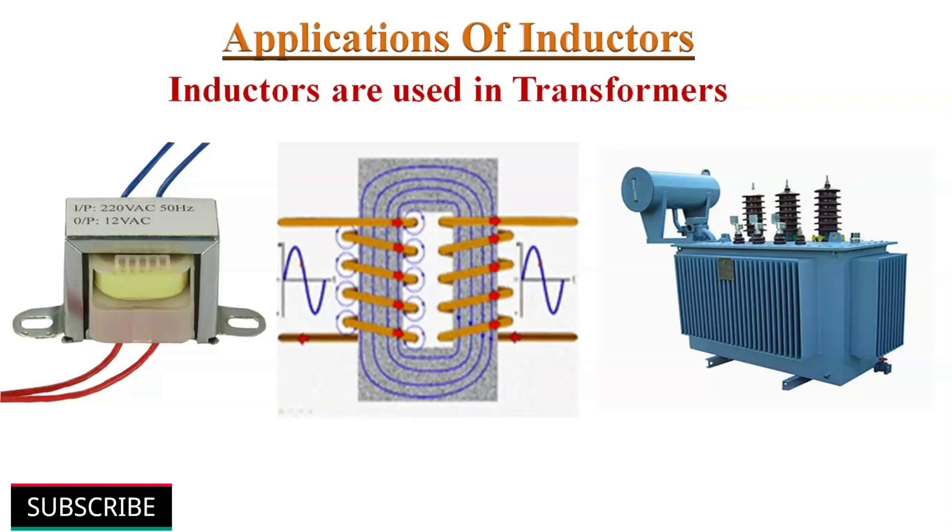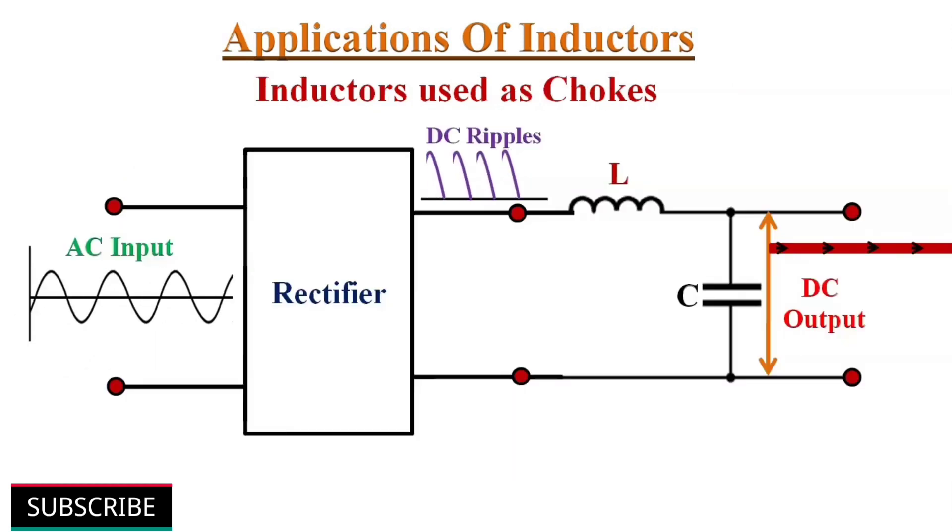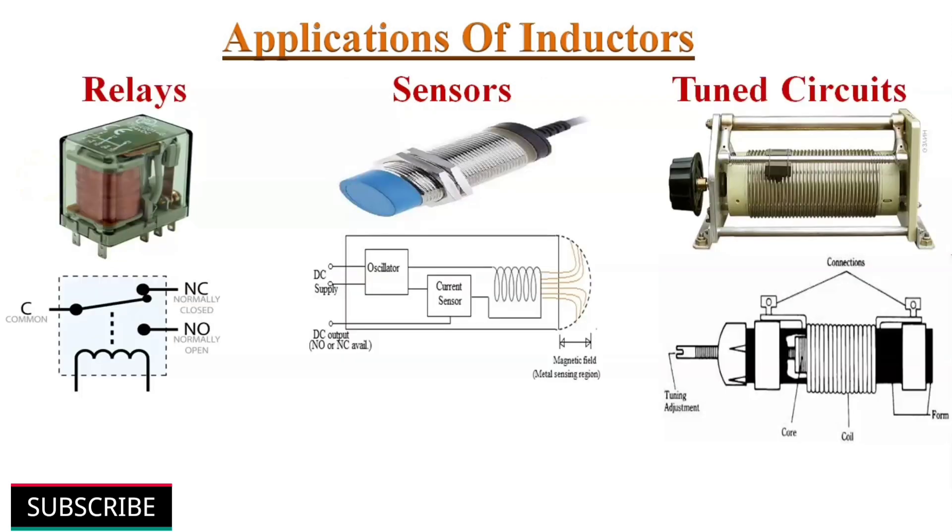Inductors are also used as chokes. We know that inductors will create an opposite current flow when alternating current flows through it. This means the inductor will choke AC current and allow DC current to pass. This property of inductors is used in power supply circuits where AC supply is converted into DC supply. Inductors are also used in relays, sensors, and tuned circuits, etc.